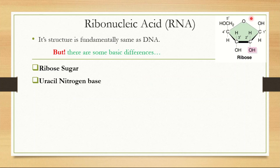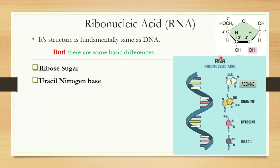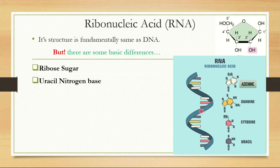RNA contains all the nitrogenous bases like adenine, guanine, and cytosine, but not thymine. Instead, the nitrogenous base here is uracil. This is another difference between DNA and RNA. RNA is single-stranded — this is another key difference from DNA — and in its backbone there is phosphate, ribose sugar, phosphate, ribose sugar alternating.